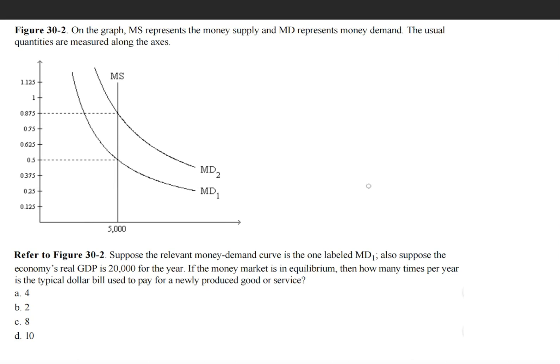The question says, suppose the relevant money demand curve is the one labeled MD₁. Also, suppose the economy's real GDP is 20,000 for the year. If the money market is in equilibrium, then how many times per year is the typical dollar bill used to pay for a newly produced good or service?